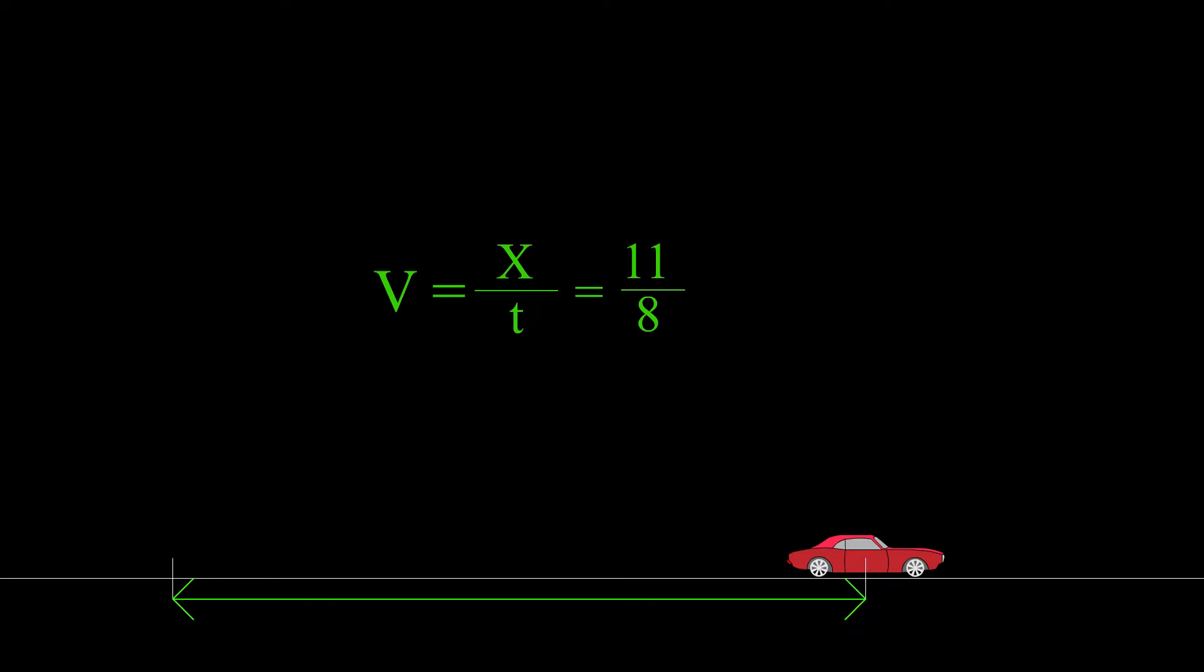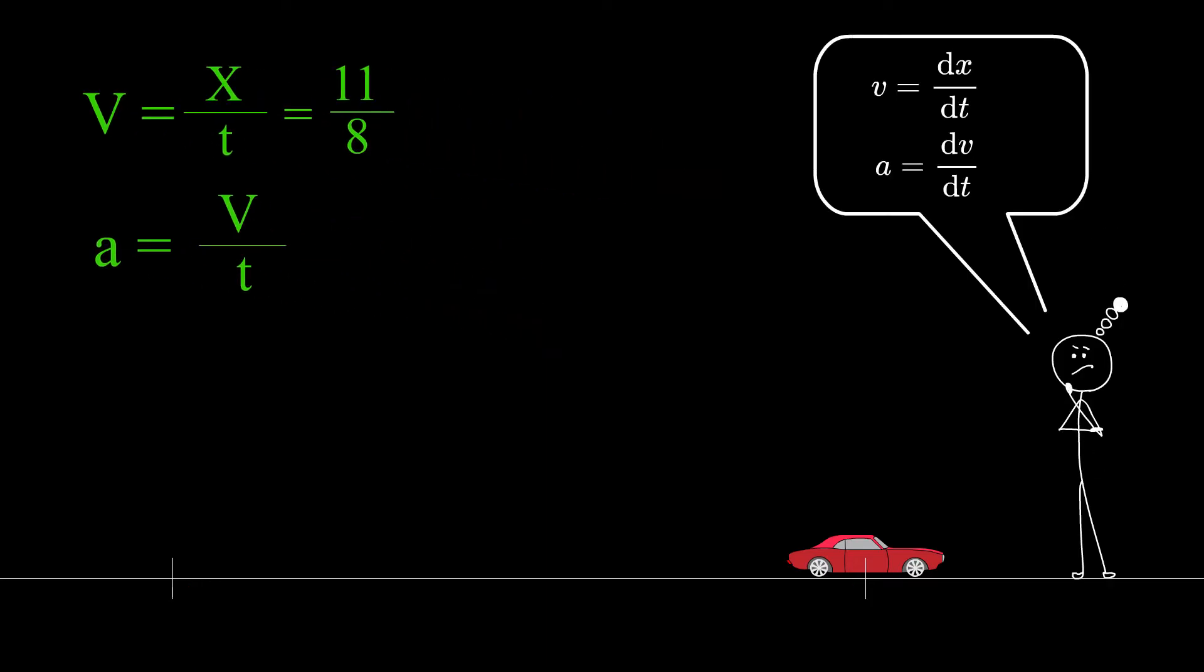Similarly for acceleration, you take the ratio of velocity and time, all pretty straightforward. Then why in physics we write this D in our expression for velocity or acceleration?